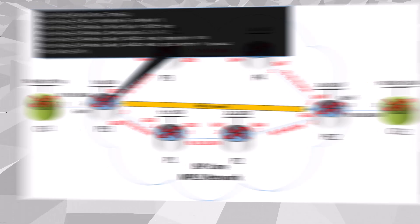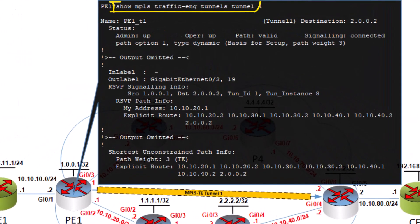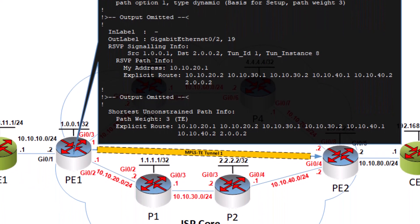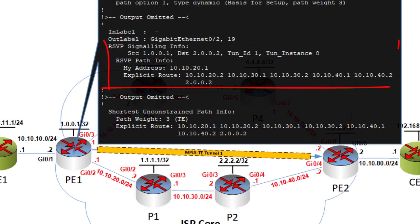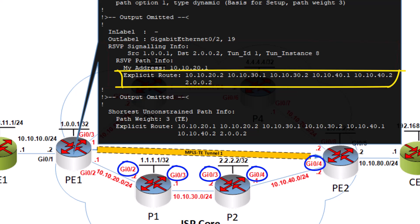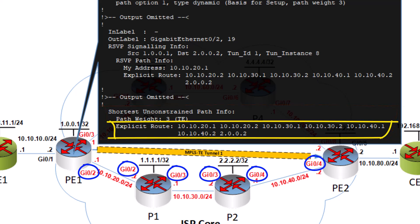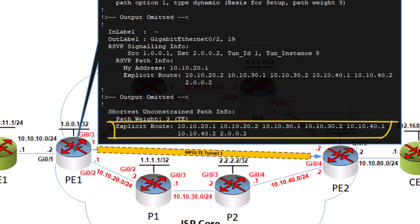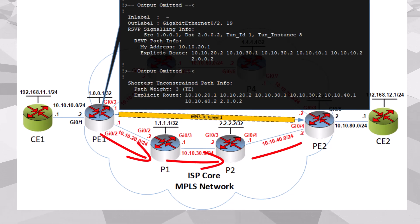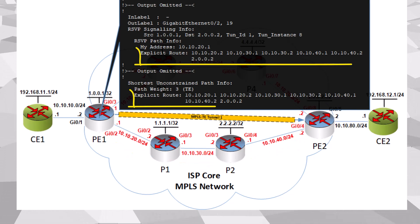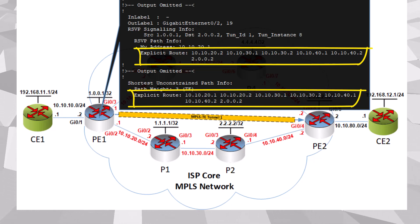Let's take a look at the default path the tunnel takes. Now using this command, we can see various pieces of information about the tunnel. Here we see two specific lists of IP addresses that show us the route this tunnel takes. We can see the RSVP information here, and we see the IP addresses of the interfaces through which the tunnel is established. Similarly, we see the underlying IGP that has been configured, and the path that it has chosen based on the traffic engineering metric assigned by the OSPF TE protocol. So the tunnel is physically routed through P1 and P2. We see that these two paths match, as expected, because by default a tunnel will follow the TE metric determined by the underlying IGP.